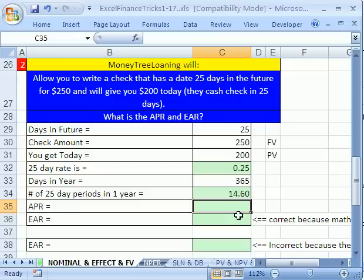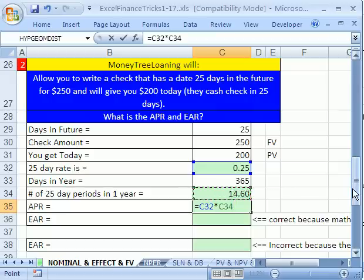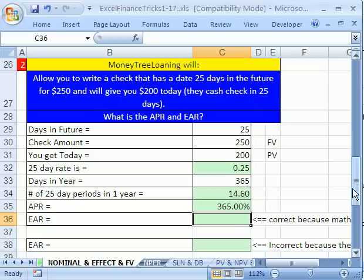Now, APR, that's relatively easy. We'll say equals, and we know our period rate times our number of compounding periods. That is how you calculate your APR, or nominal rate. Enter. Oh no. That is terrible. 365%. You've got to be kidding me. I thought that was against the law. I guess not. That's not even the end of it.